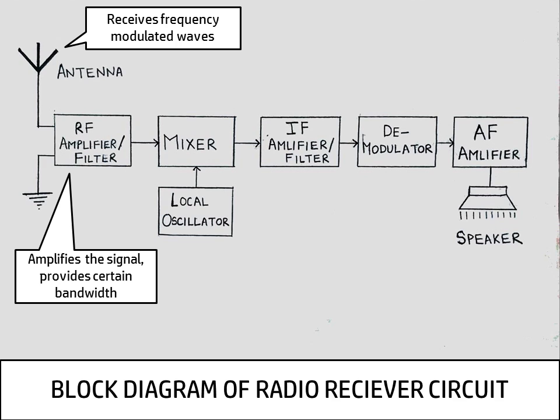Now, this amplified and treated bandwidth of signals is then moved to the mixer. As the name suggests, this component superimposes the waves from the amplifier and the oscillator. Now looking at the oscillator, this is a component to which the input can be given by us. So the input is given in a manner that the resultant output that we get is a clear one.